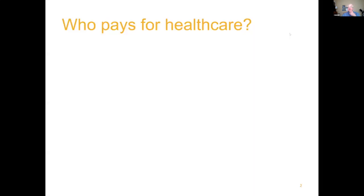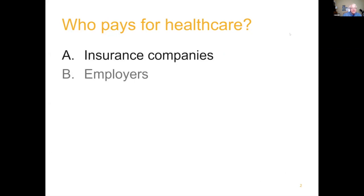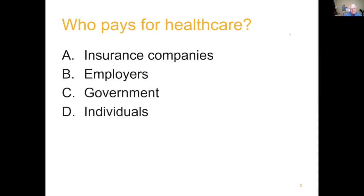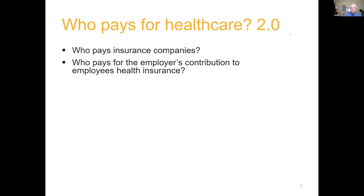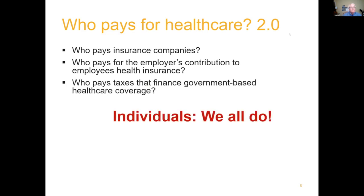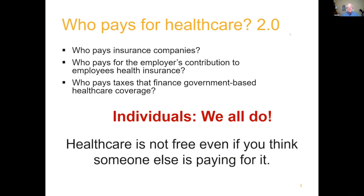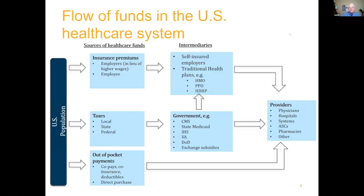Let's take a look at how payments work — what is the flow of money? Who pays for insurance? Companies do, employers do. As you pointed out, the majority of people are getting their coverage through employers. Government does, individuals do — all of the above. But if you go to 'who pays for health care 2.0': who pays? Insurance companies. Who pays for the employer's contribution? In essence, it's in lieu of wages you would have otherwise had. Who pays taxes? Individuals do. We all basically pay for this.